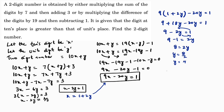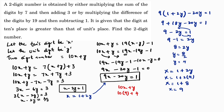Substituting y equals 4 back into x equals 1 plus 2y: x equals 1 plus 2 times 4, so x equals 1 plus 8, which gives x equals 9. Therefore the two digit number is 10x plus y, which is 10 times 9 plus 4, equals 90 plus 4, equals 94. The condition that the tens digit is greater than the units digit is satisfied since 9 is greater than 4. So the answer is 94.